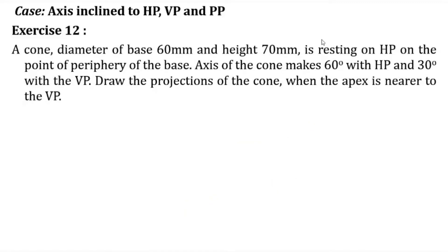The problem: a cone with diameter of base 60 mm and height 70 mm is resting on HP on a point of the periphery of the base. The axis of the cone makes 60 degrees with HP and 30 degrees with VP. Draw the projections of the cone when the apex is nearer to the VP. These two angles — 60° with HP and 30° with VP — are the true angles.